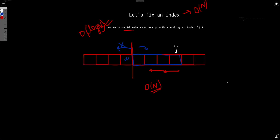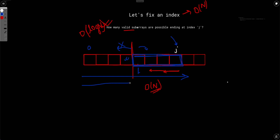So for each index j, we do a binary search from index 0 to j. We check whether a given subarray starting at index i and ending at j is valid. The length is simply j minus i. For the sum, we use prefix sums to get it in O(1). Once we have sum and length, we check if score is less than k.